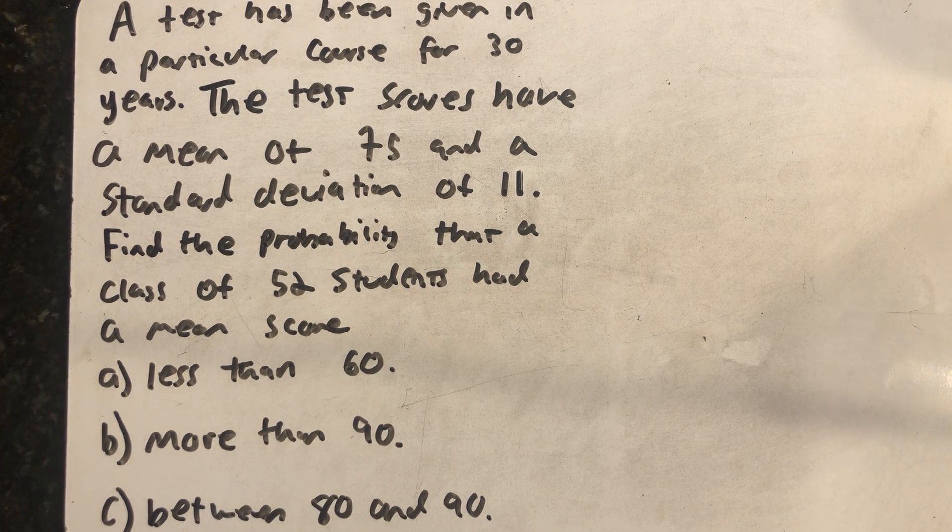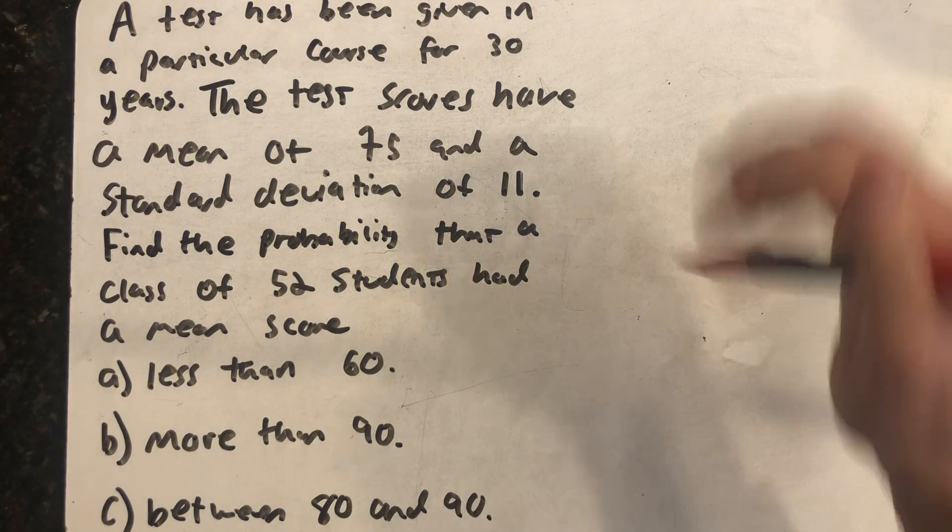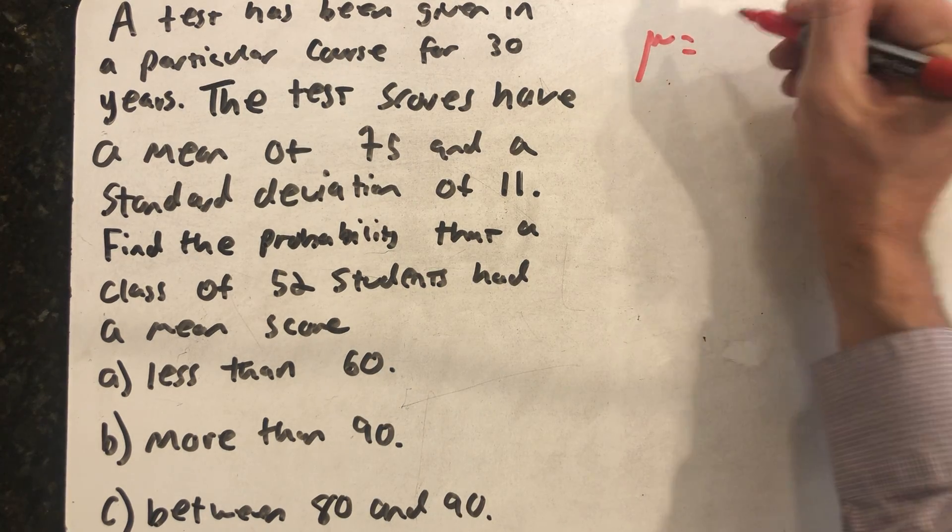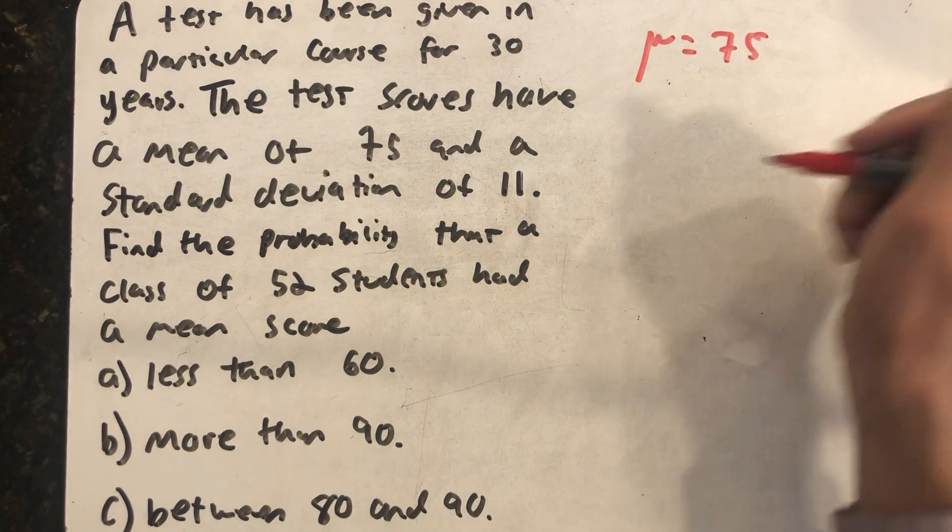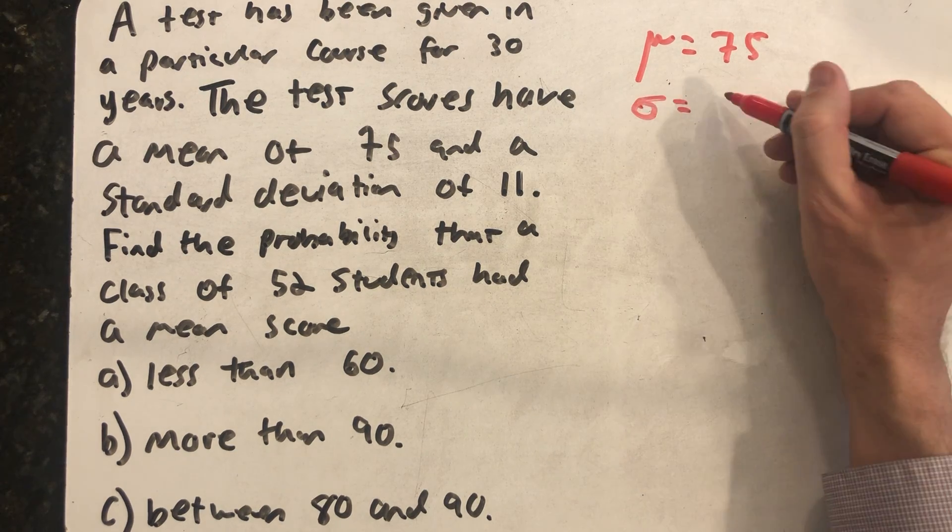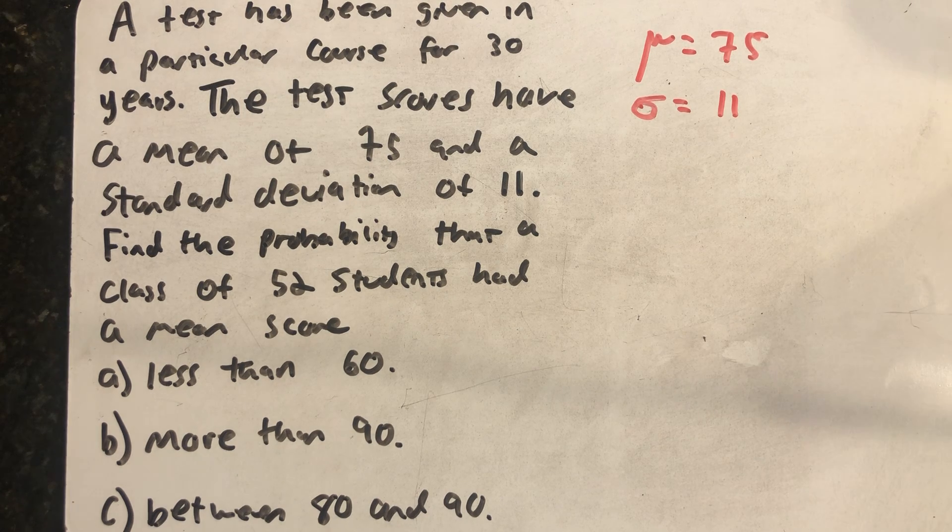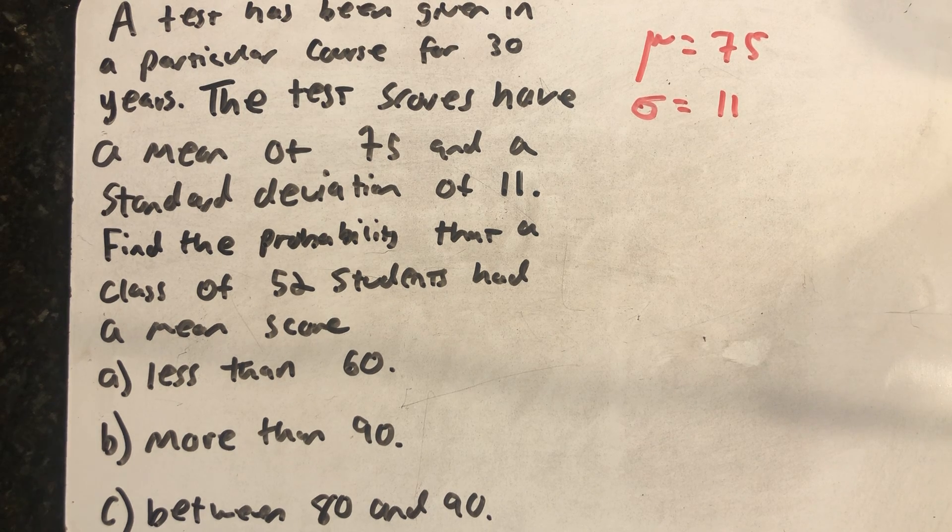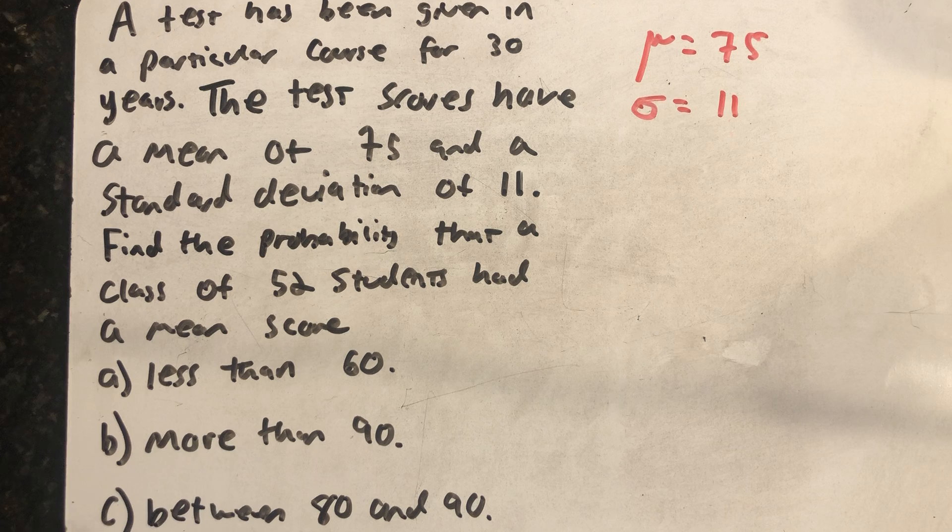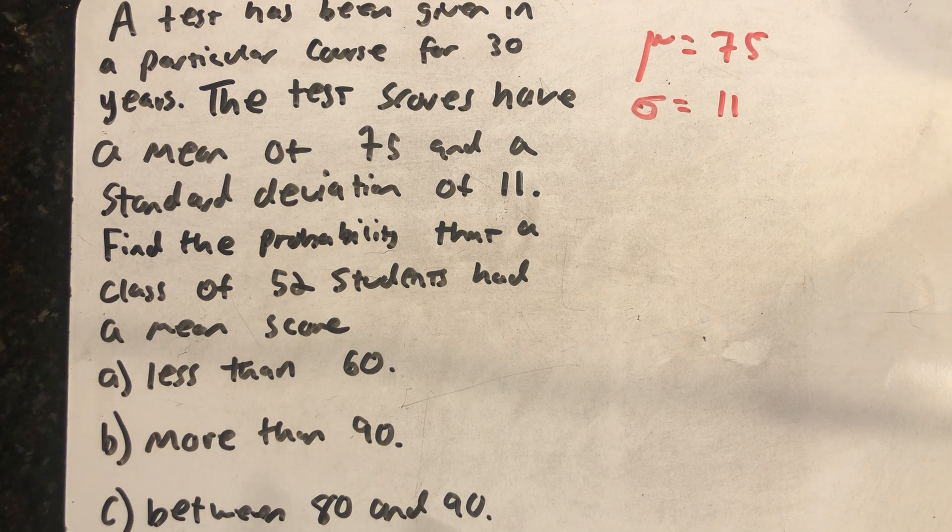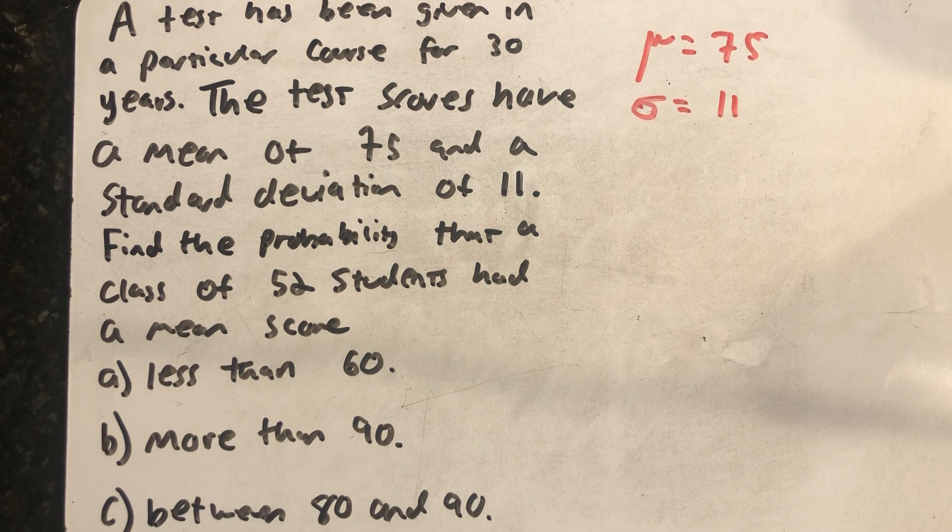All I know about the distribution of test scores is an average of 75, and I'm assuming that's a percentage, but it doesn't say, and the standard deviation would also be 11 percentage points in the same unit. Find the probability that a class of 52 students had a mean score less than 60, more than 90, or between 80 and 90.